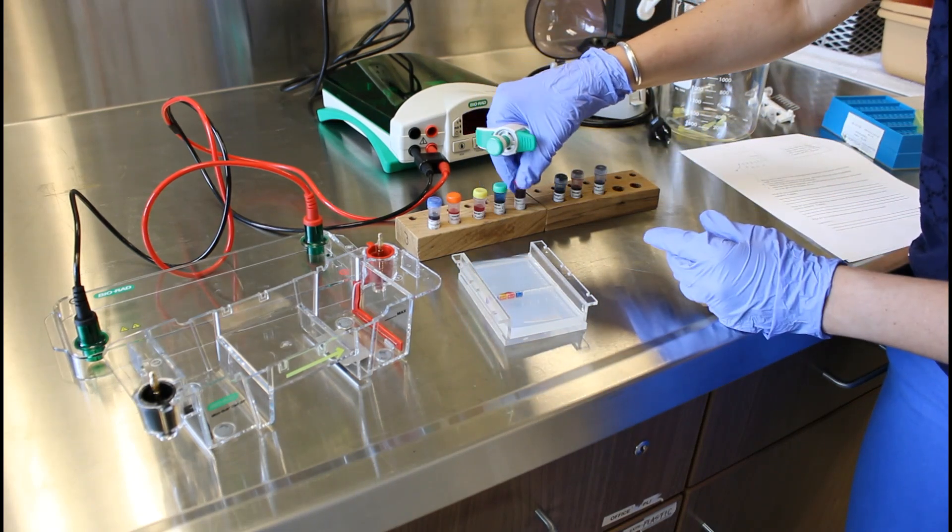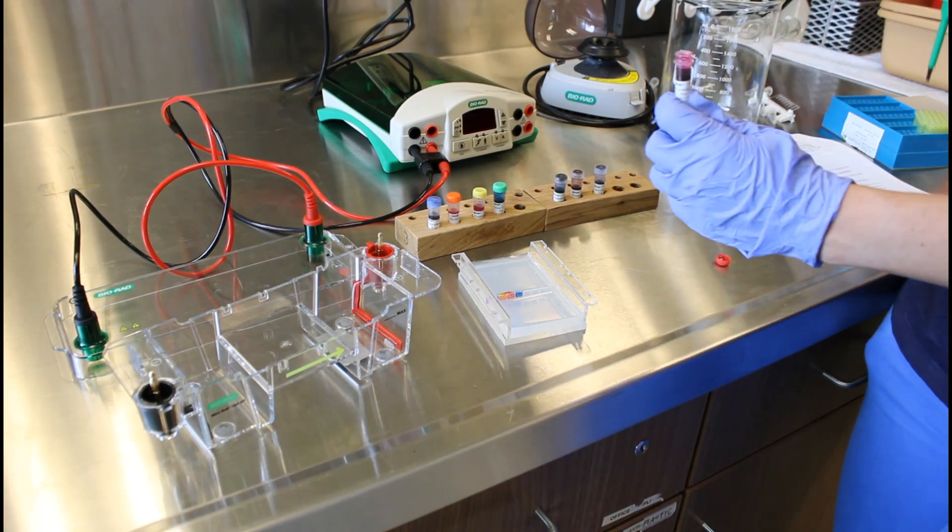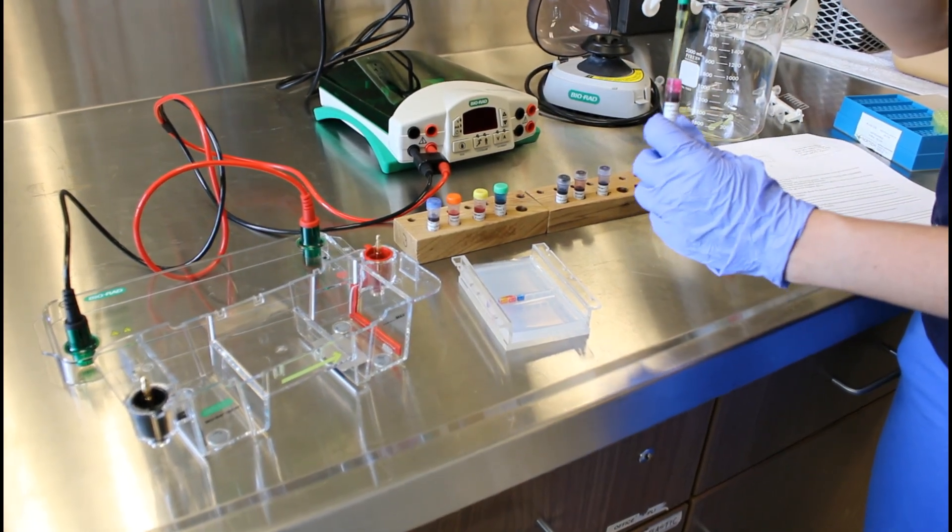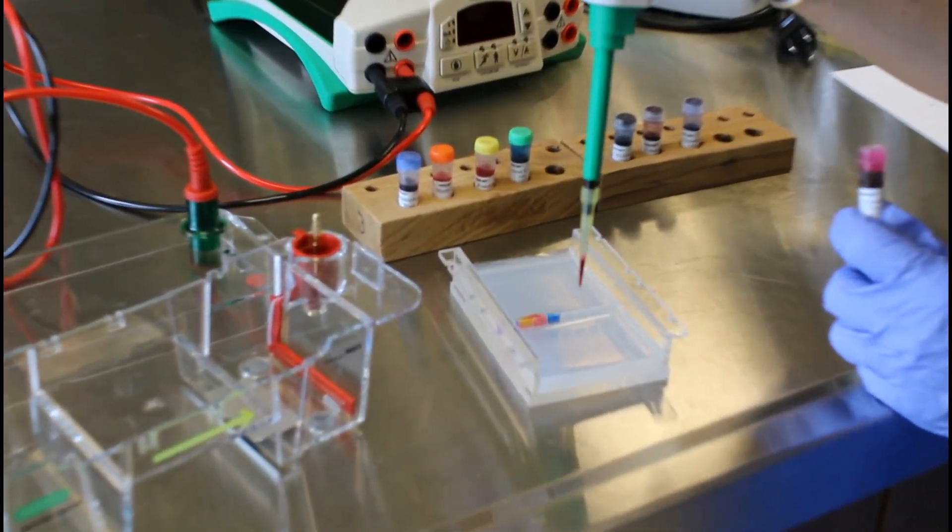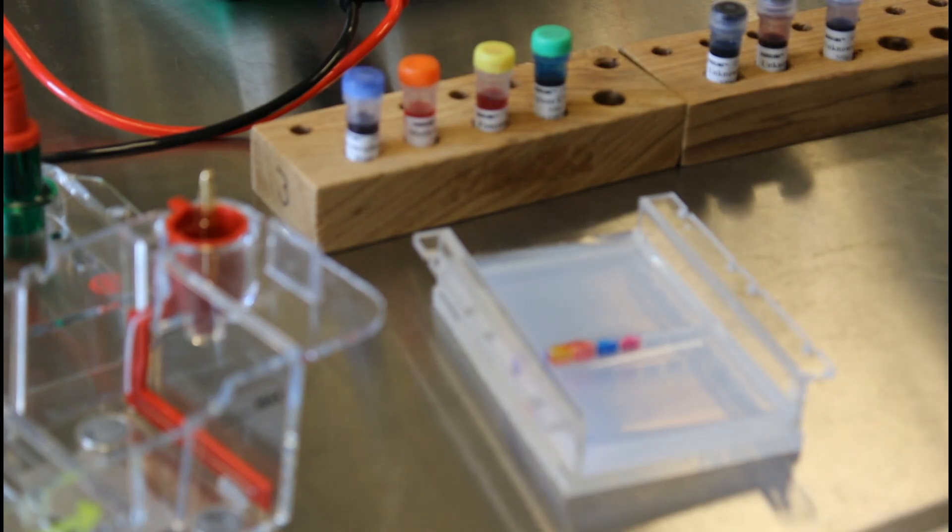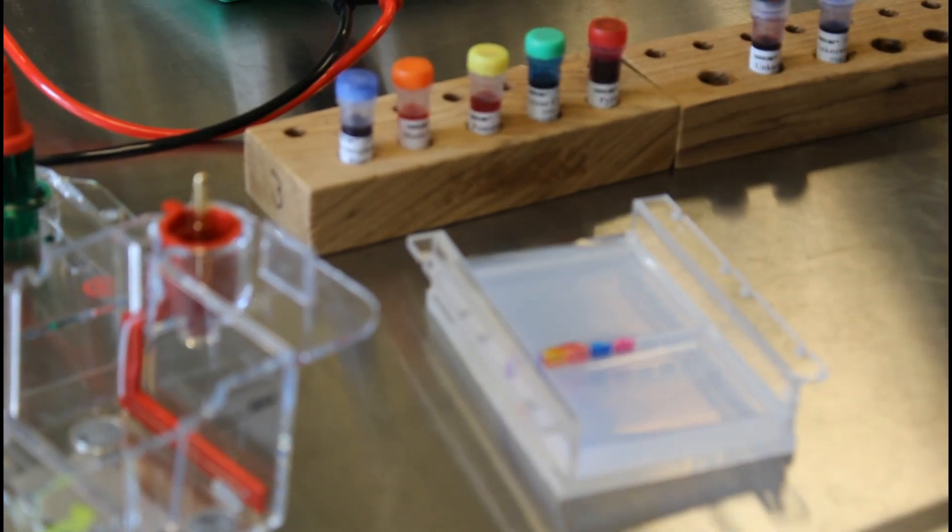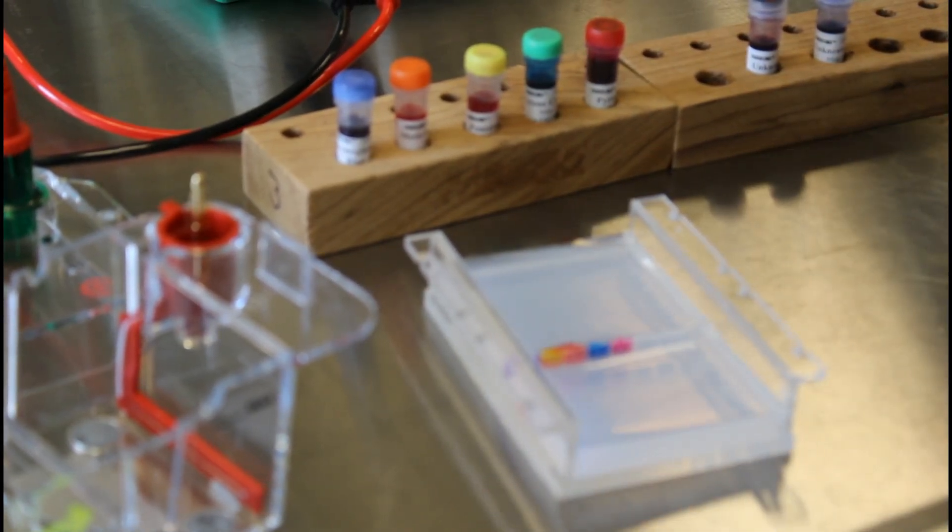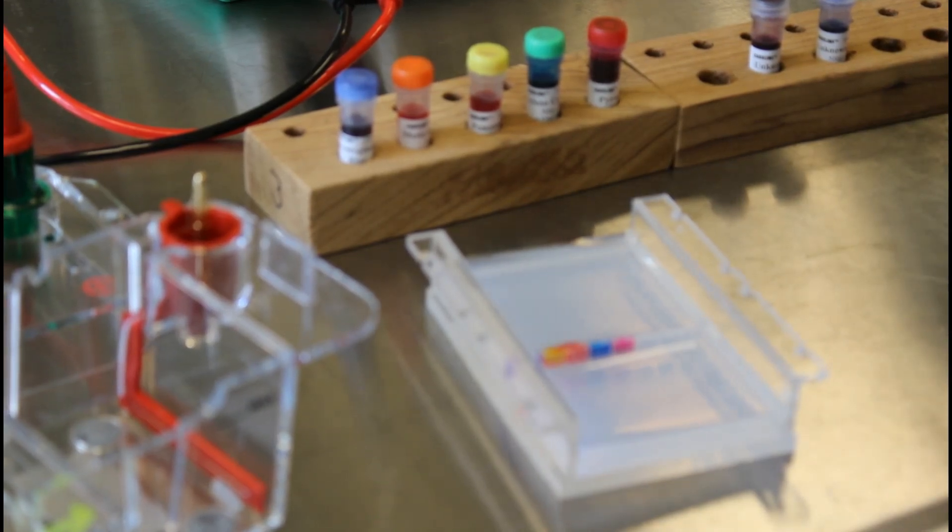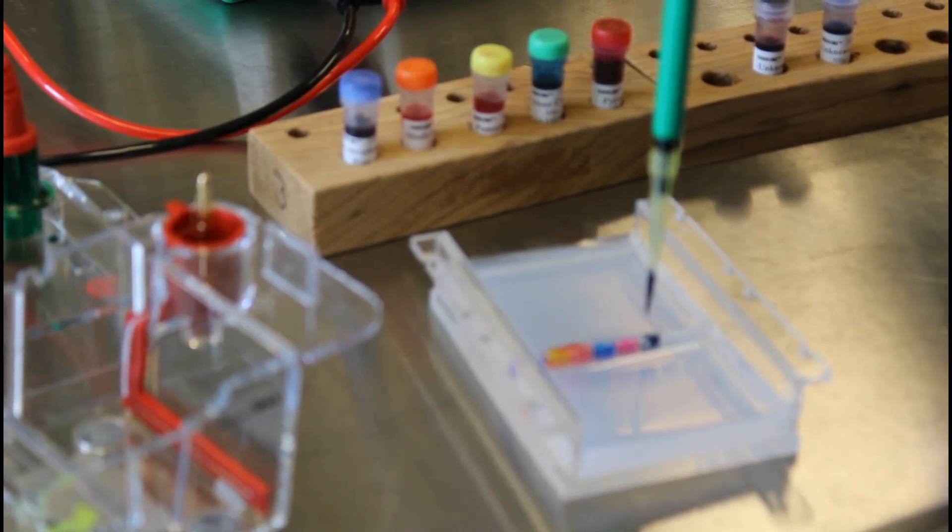And then I have this pyronin Y or PY. I'm going to grab a fresh tip, put this in the fifth well over. And now we're going to start loading up the unknowns. Each time I'm going to grab a fresh tip. This is our unknown one going next to the PY. Once again 20 microliters into the well.